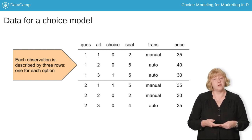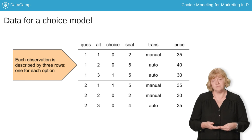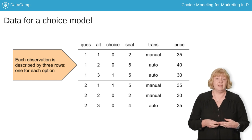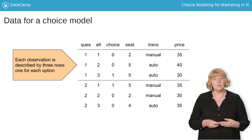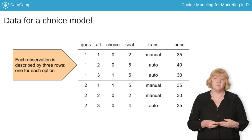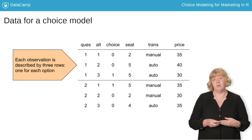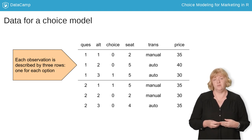The second three rows describe another choice. It also has three alternatives, but that doesn't have to be the case. Some of the observed choices may have four or five or more options. The important thing to realize is that there is a row in the data frame for each alternative that was available, and a set of rows make up one observed choice.